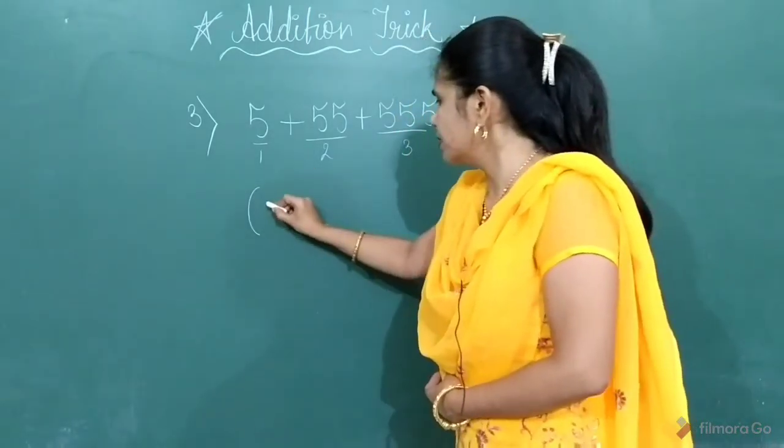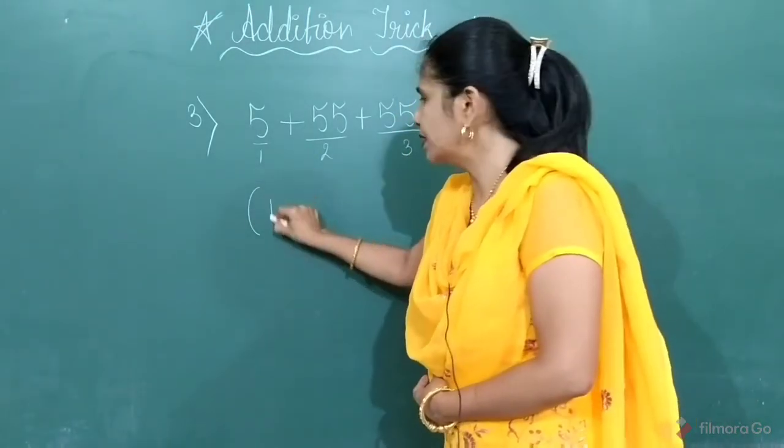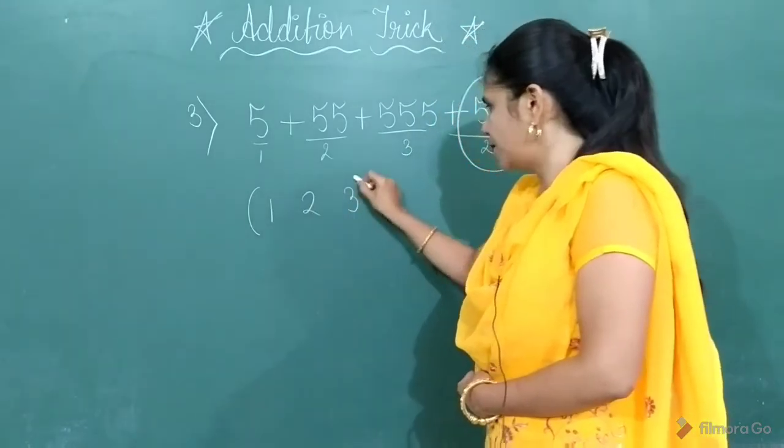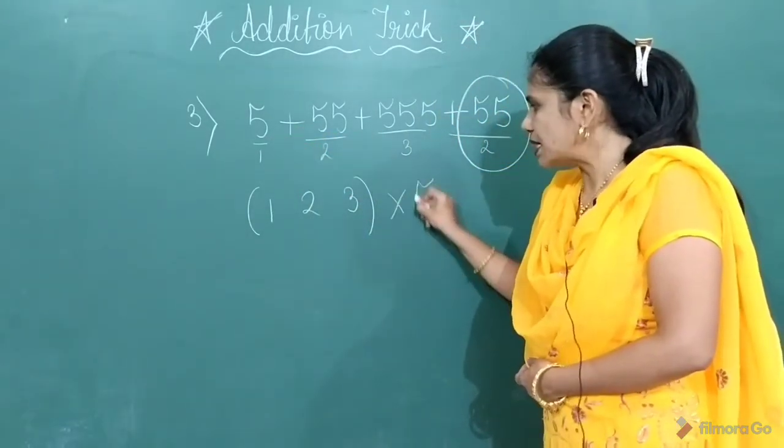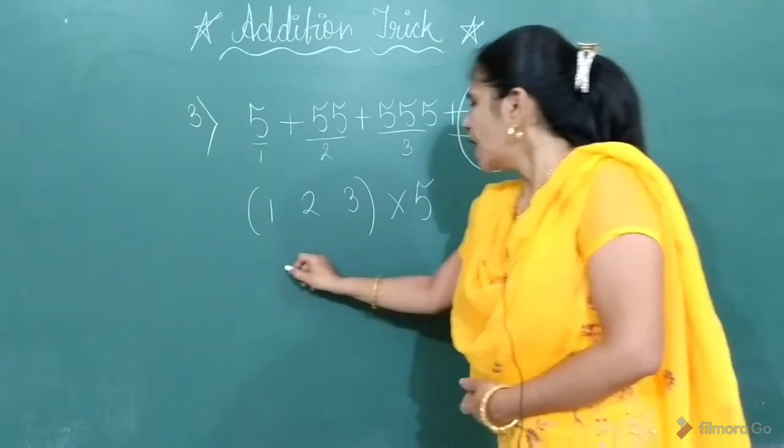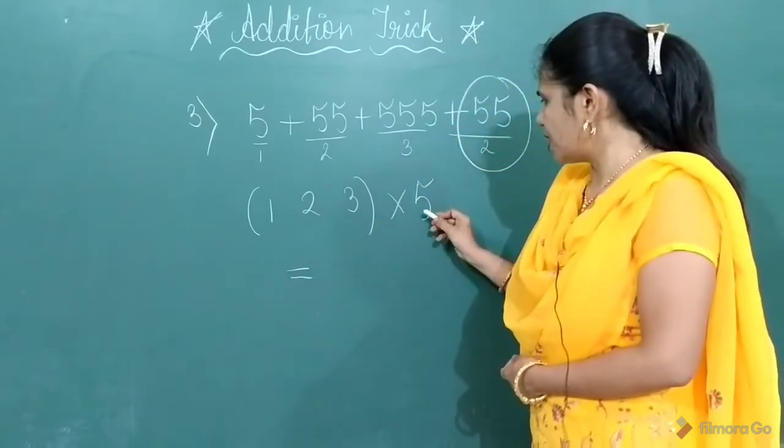So when you will arrange in increasing order, what you will get? 1, 2, 3. Now as the digit 5 is repeating, you have to multiply by 5 and then just find out the answer.